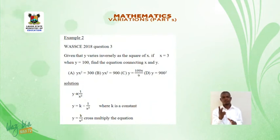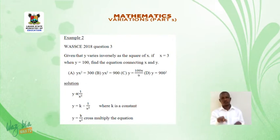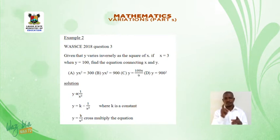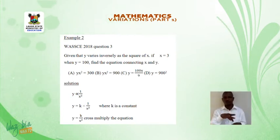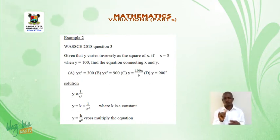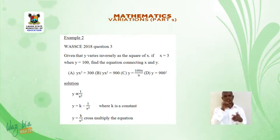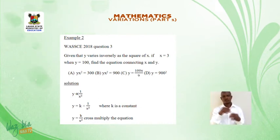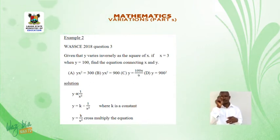Example 2. FSTC 2018, Question 3. Given that y varies inversely as the square of x, if x = 3 when y = 100, find the equation connecting x and y. Options: a. yx² = 300, b. yx² = 900, c. y = 100x/9, d. y = 900/x².